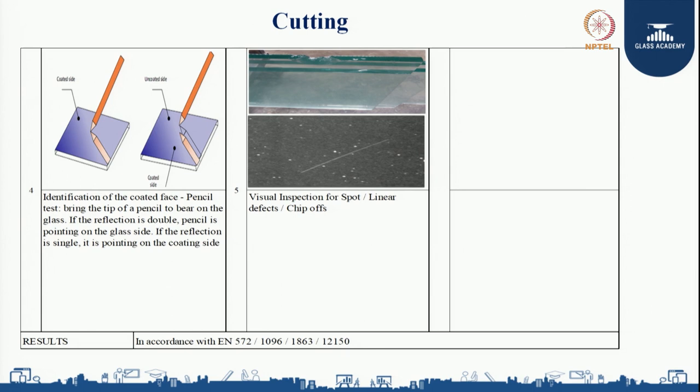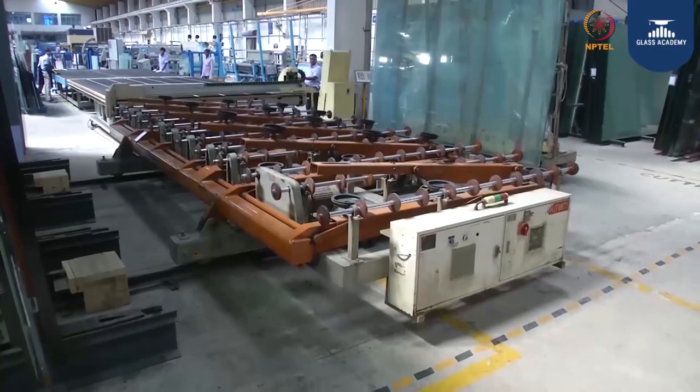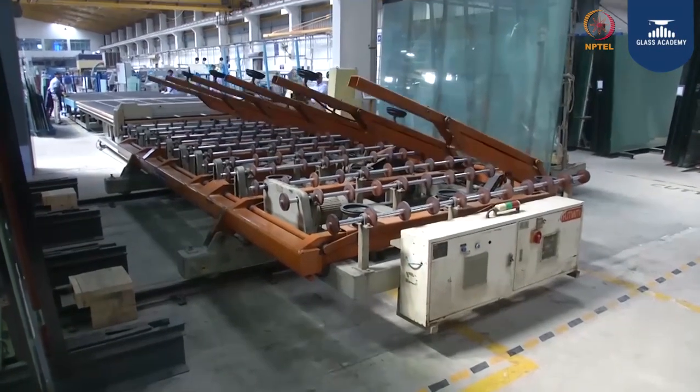Visual inspections include spots, linear defects, chip-offs, chipping, and scratches, which are measured based on the intensity of the defect and at a particular viewing distance — whether visible from 1 meter, 2 meters, or 3 meters — and the intensity level: light, medium, or heavy. This concludes the cutting inspection overview.